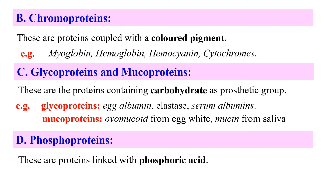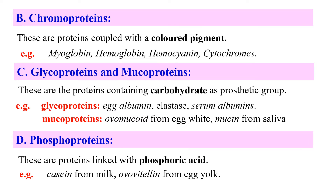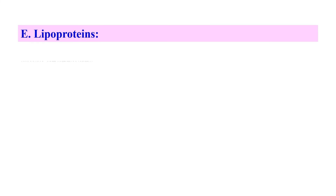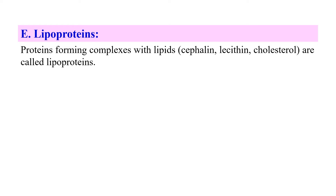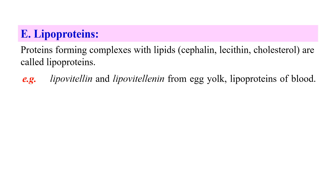Next, phosphoproteins — these proteins are linked with phosphoric acid, which is why they are named phosphoproteins. Examples include casein from milk and phosvitin from egg yolk. Next, lipoproteins — these proteins are complexed with lipids such as cephalin, lecithin, and cholesterol. They are soluble in water but insoluble in organic solvents. Examples include lipovitellin and livetin from egg yolk, and lipoproteins of blood.